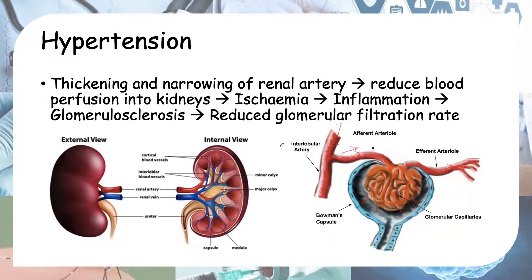Now let's go to how hypertension causes chronic kidney disease. Hypertension means high blood pressure in your blood vessels. As a result of this high blood pressure, your vessels have to compensate by thickening to handle this very high pressure.